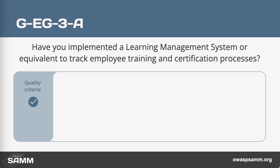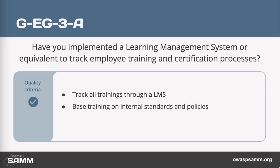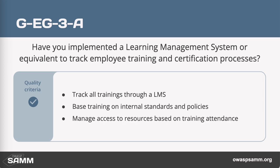At level three, the question is whether you are tracking progress. At this level, you have all trainings run through a learning management system to show who's completed a particular curriculum. You can be providing metrics back to indicate how well the teams are doing to get their trainings completed. You also base your training material on internal standards and policies, so you have compliance-related required trainings. If you need to comply with HIPAA or PCI DSS, there should be training regarding that material. And as mentioned, you manage access to resources based on training attendance.